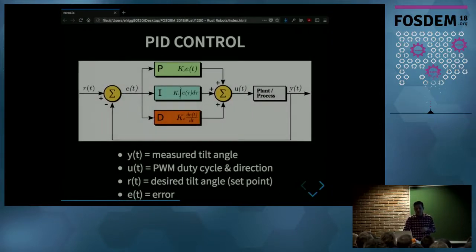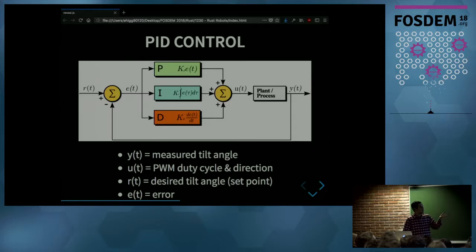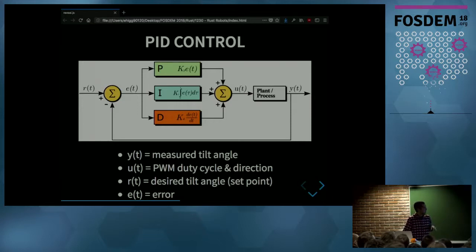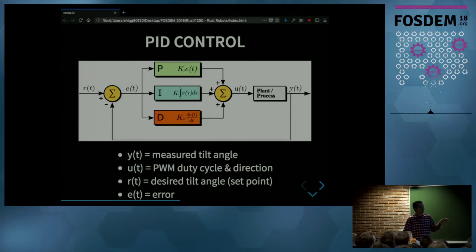Now we have both pieces: the angle and motor control. We use a PID controller to pick the duty cycle to stabilize the robot. In this diagram, the process on the right is the robot, and variable Y is the measured tilt angle. Variable R on the left is the set point — the angle we want the robot to be at. Choosing zero makes the robot stay upright. The difference between set point and measured angle is the error, which is scaled by the three PID gains to produce control variable U — the duty cycle applied to the motor.